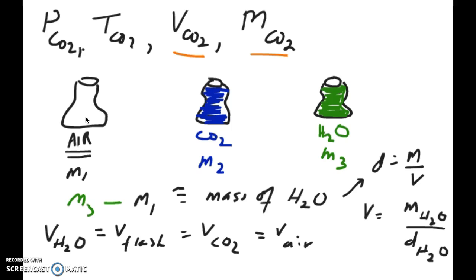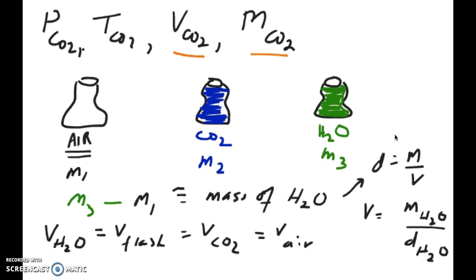We can use the relationship of density to mass and volume to figure out the mass of air. We know that density is equal to mass over volume, so if we want the mass of air we basically have to multiply the density of air times the volume of air in the flask. The density of air is something we can easily look up — your lab manual has a table showing the density of air at various temperatures and pressures.